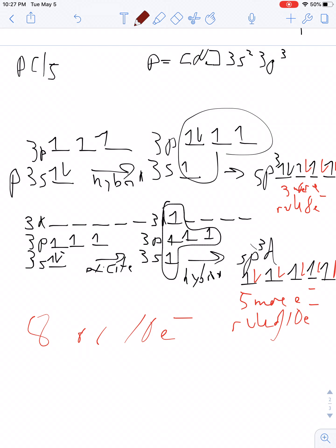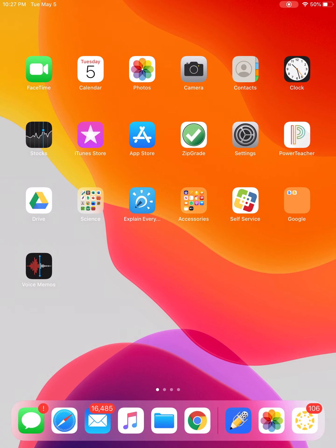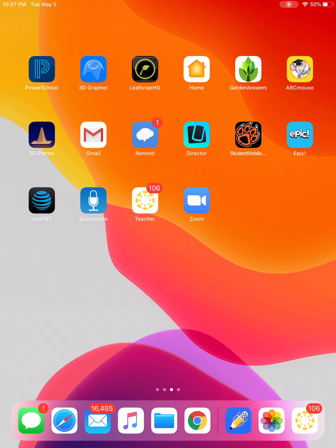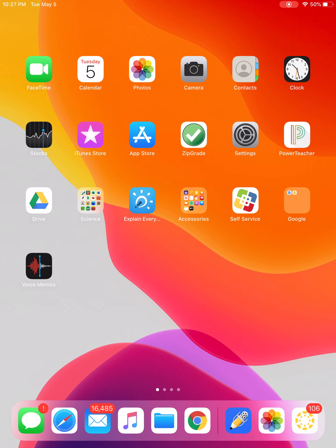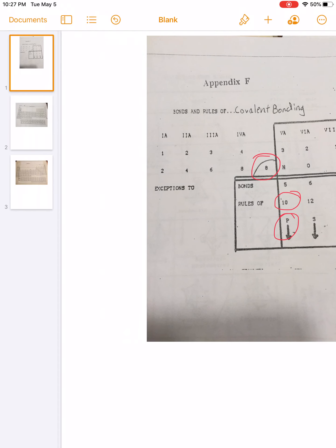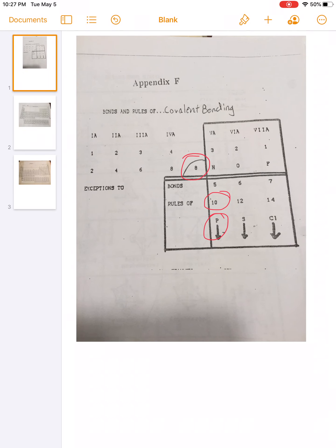And if I go back and I look at my appendix F, if you look at this, phosphorus on down can follow the rule of 8 or the rule of 10.